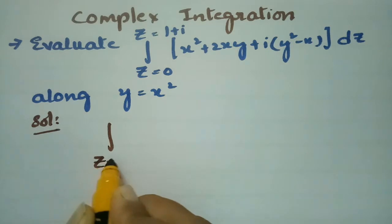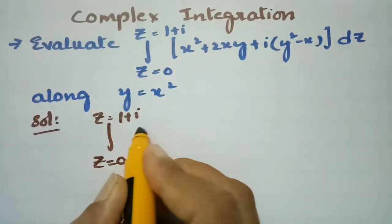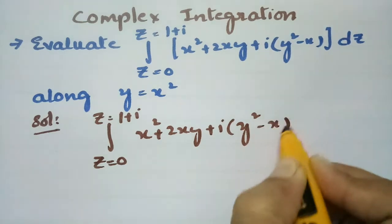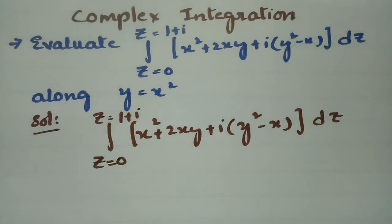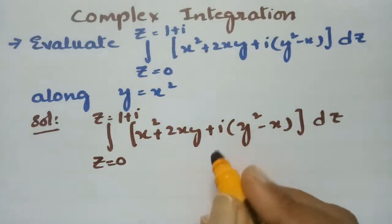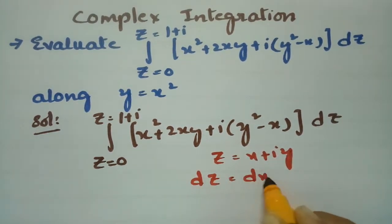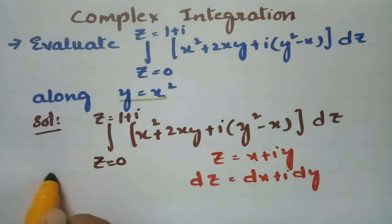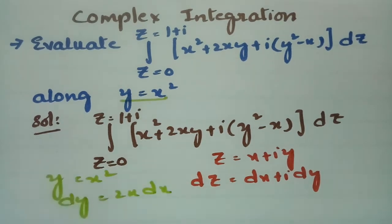The integral is from z = 0 to z = 1 + i of (x² + 2xy) + i(y² − x) dz. As you know, z = x + iy, so dz = dx + i·dy. Along the given curve, y = x², so dy = 2x dx.